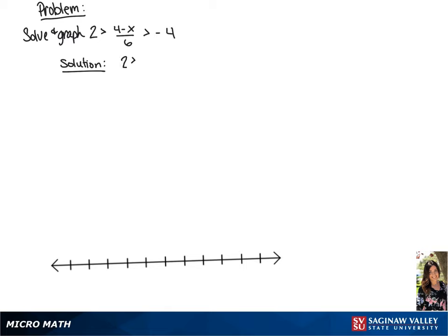We have 2 is greater than 4 minus x over 6, and 4 minus x over 6 is greater than negative 4.